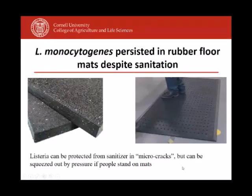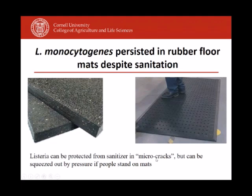Where did this Listeria survive? In this case, we found it surviving in a floor mat — old, thick mats about three to four centimeters thick. Sanitation consisted of foaming them with sanitizer or submerging them, but the floor mats were too thick and had too many cracks. Listeria inside the mat was protected from sanitizer. The floor mats were placed back on the floor at the start of processing, a person stepped on them, and that pressure brought the Listeria back into the facility. We removed all floor mats and replaced them with cushioned shoes, and never found this Listeria monocytogenes in that facility again after it had lived there for at least two years.